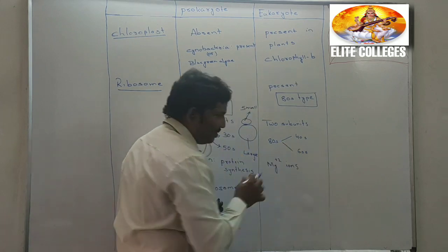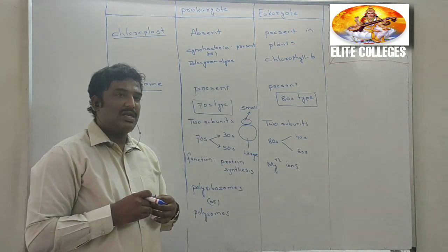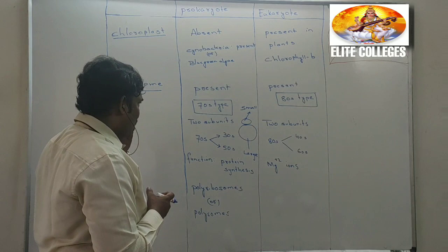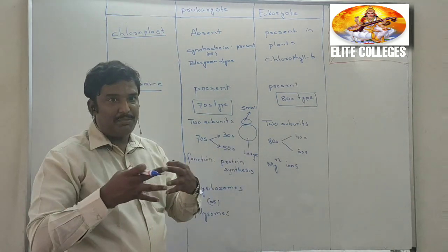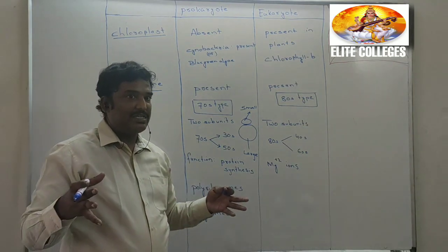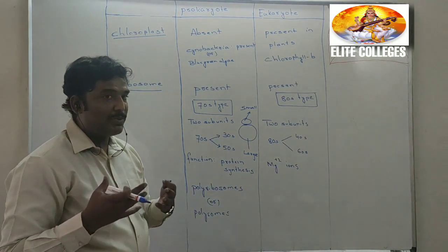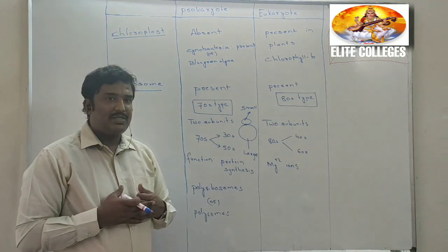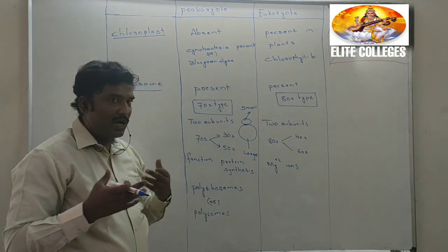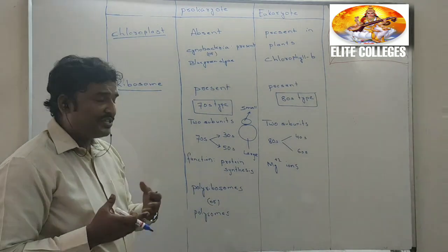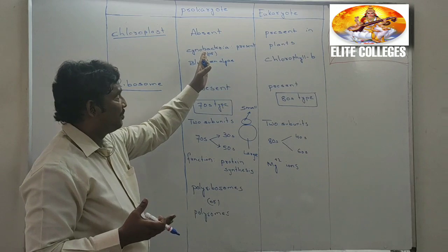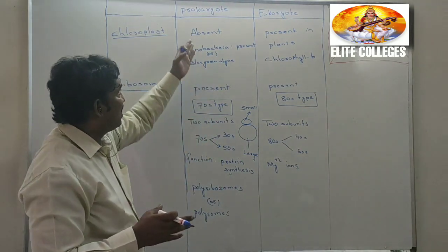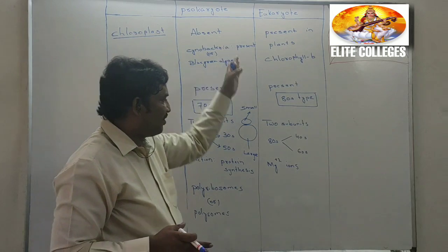Magnesium ions are essential for ribosome assembly. If enough magnesium ions are not present in the cytoplasm, the small subunit and large subunit do not bind to each other and remain separate in the cytoplasm. If enough magnesium ions are present, the small subunit will attach to the large subunit. The major function of ribosomes is protein synthesis — this is the same for both prokaryotes and eukaryotes.